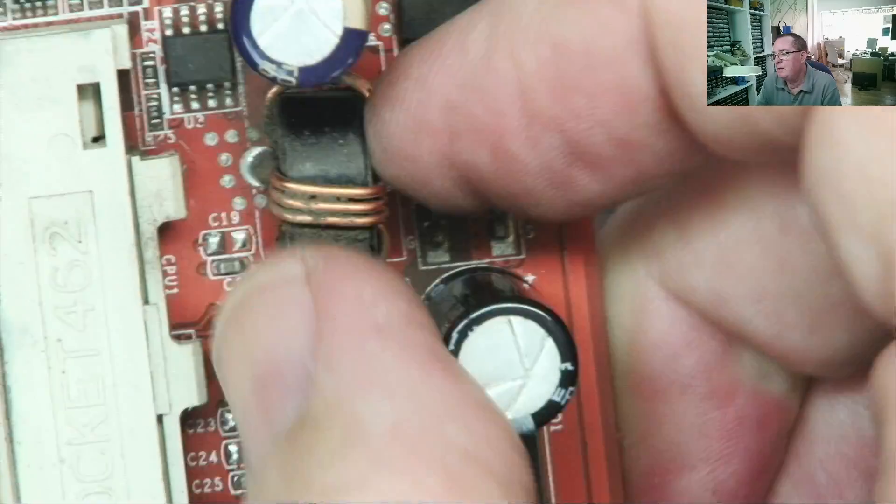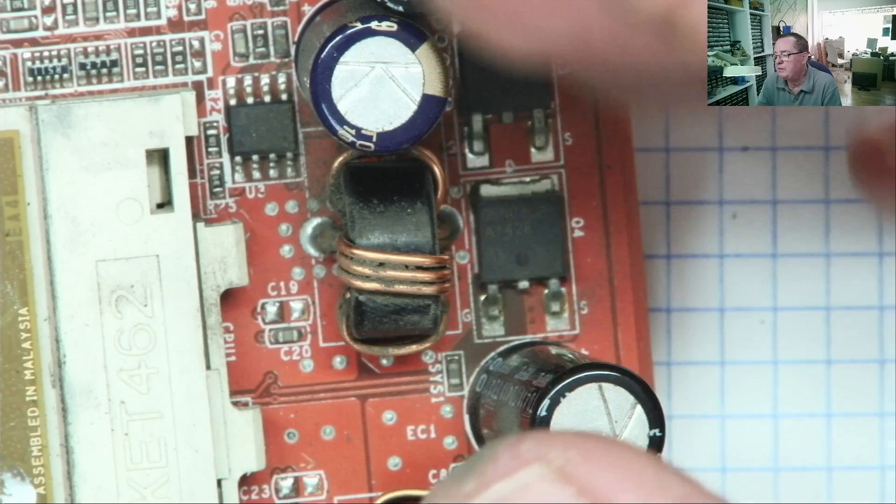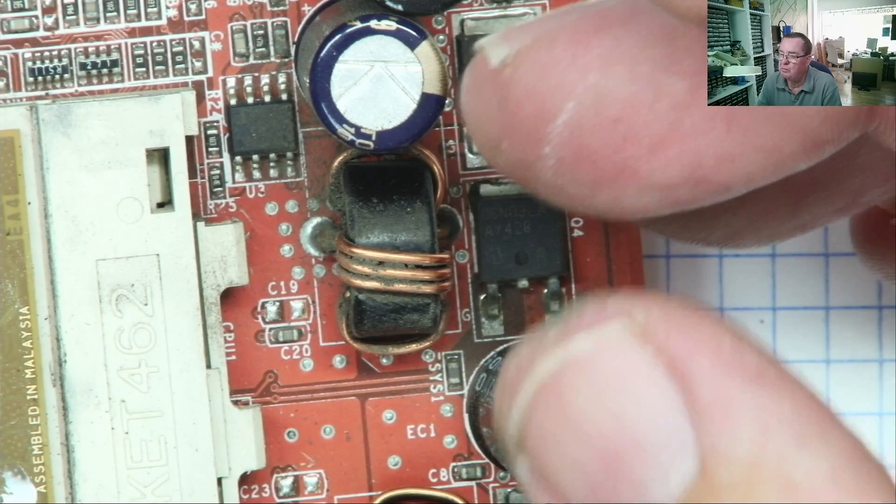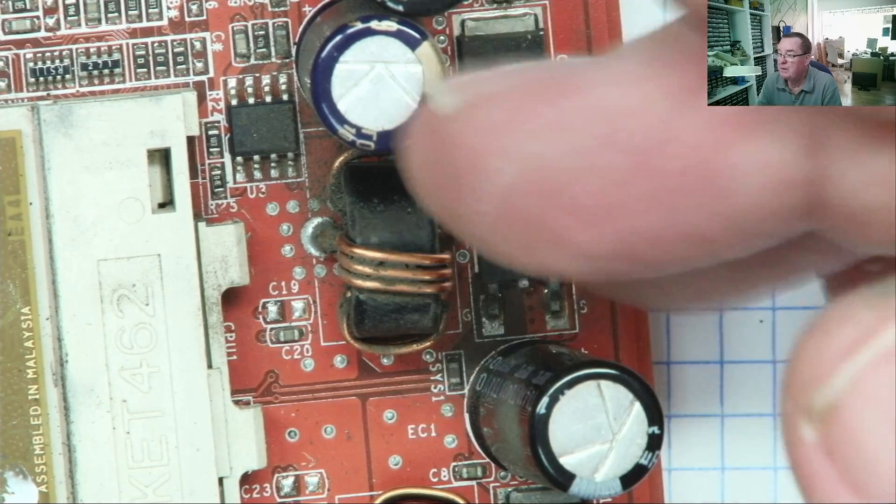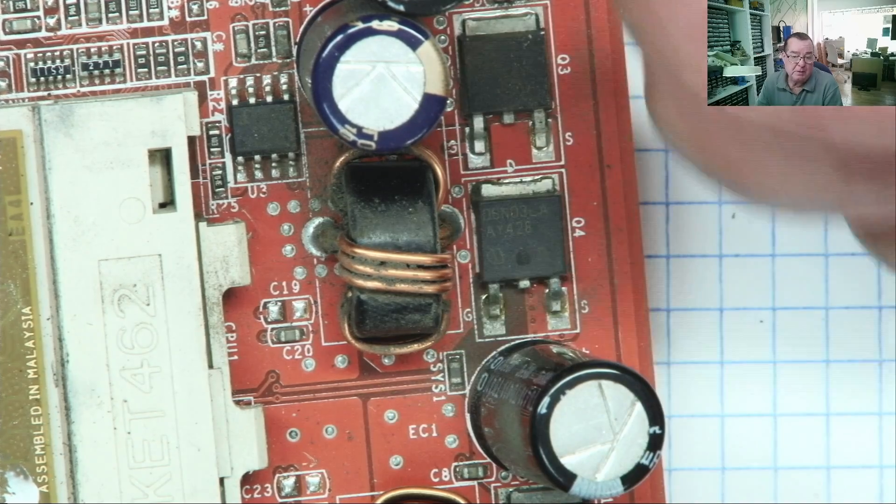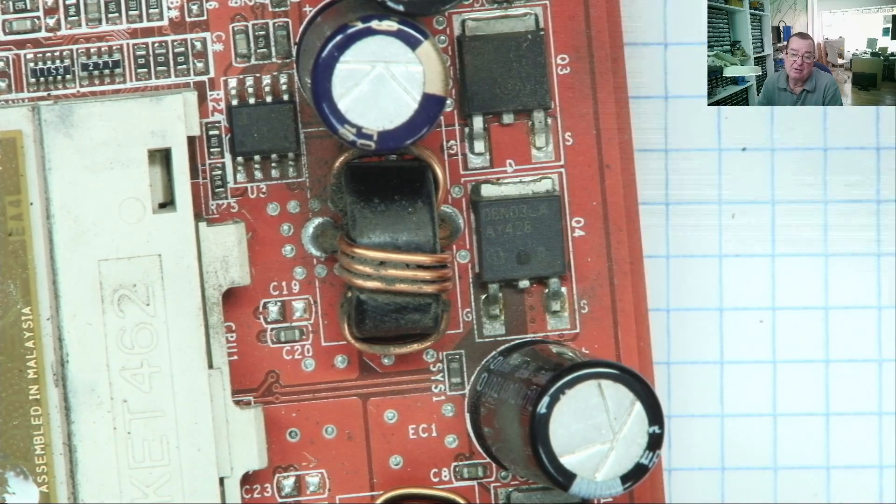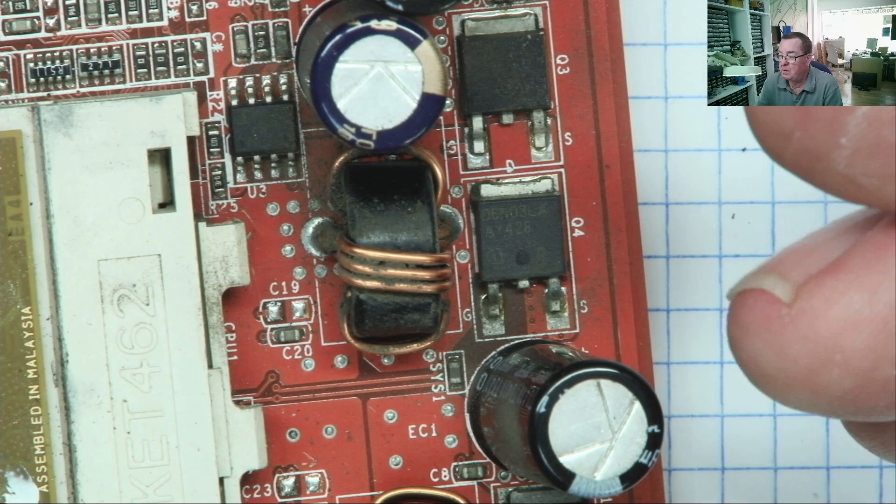Some inductors actually have a solid metal iron core or laminated iron sheets made into a core. And some inductors will just have an air core. It's just a coil of wire, an open coil of wire.